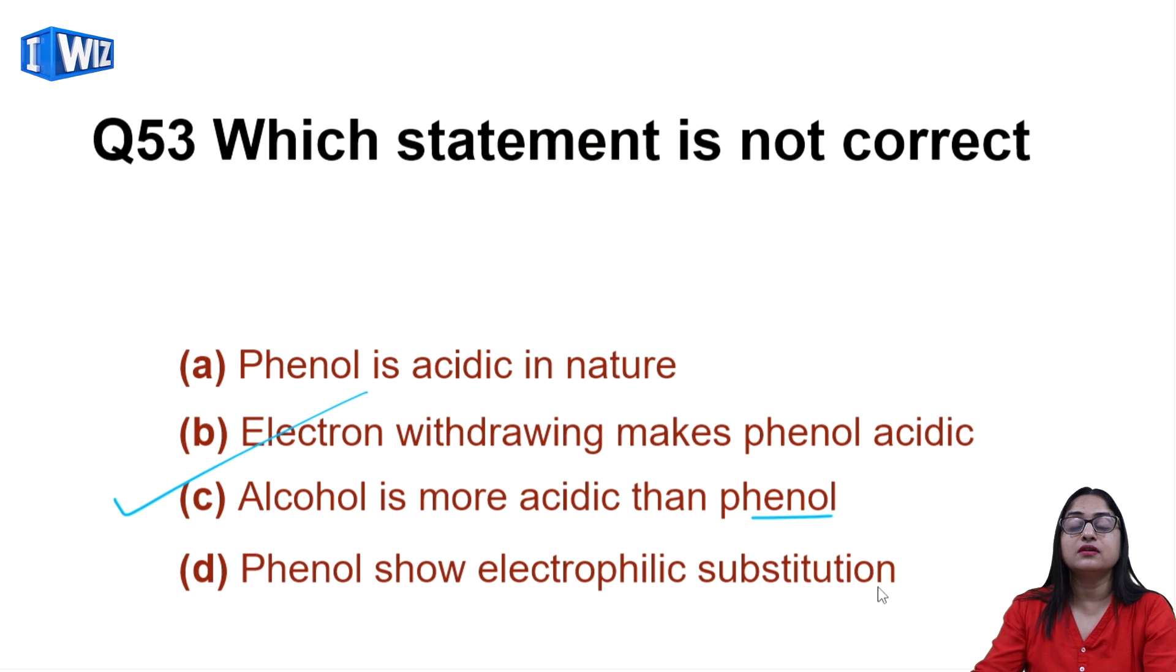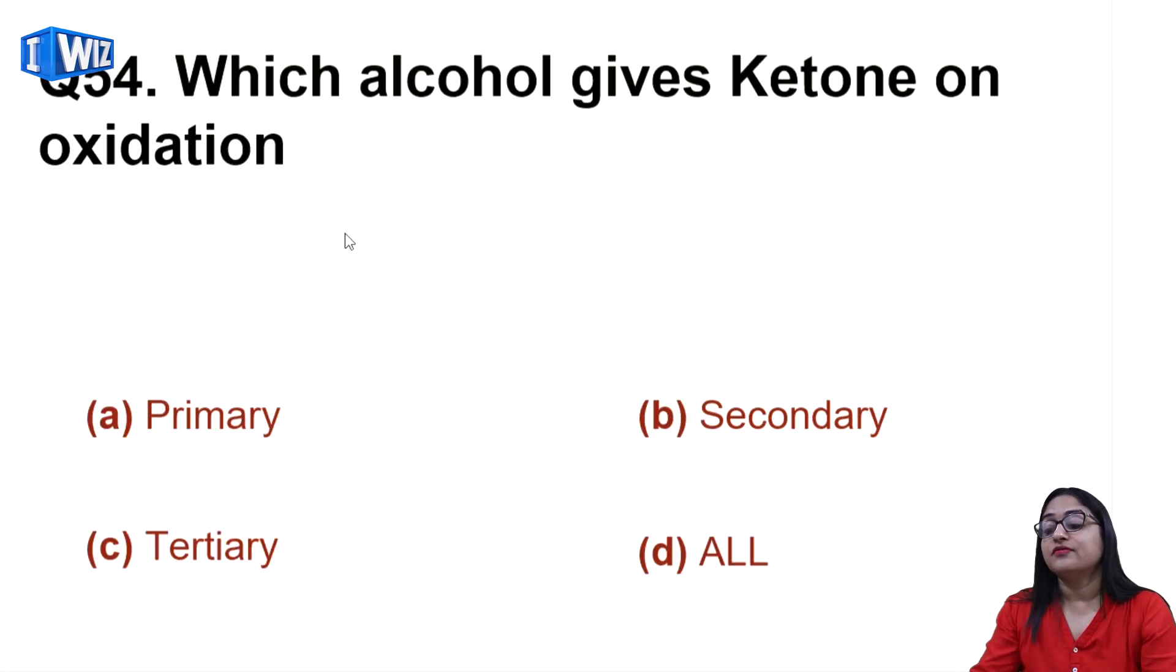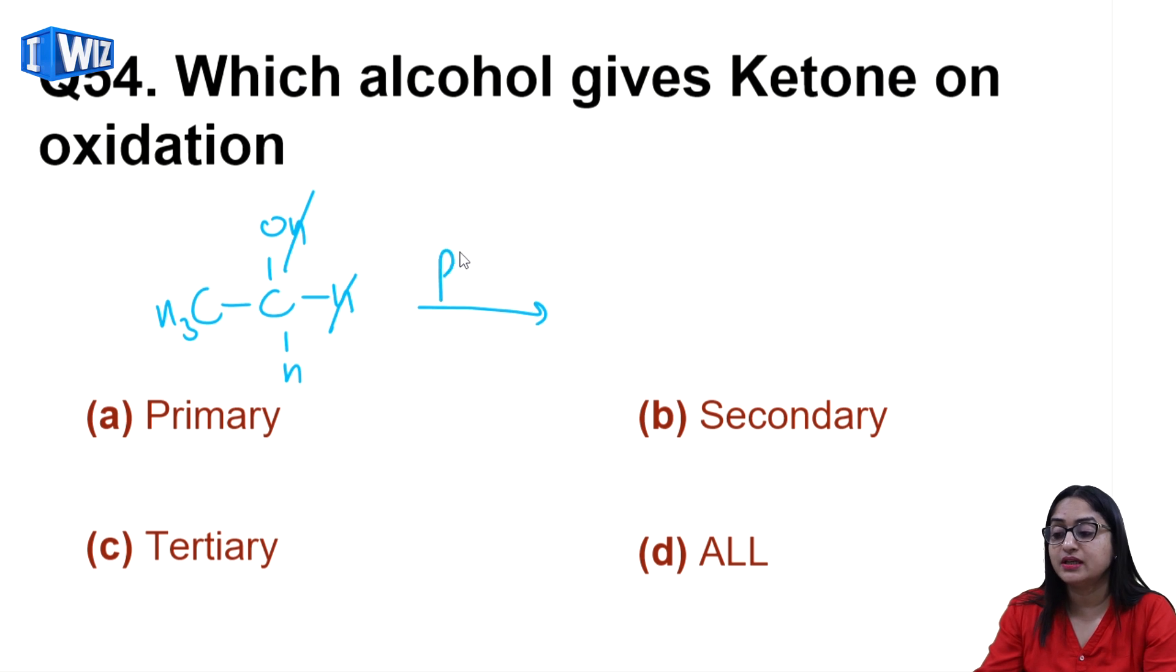Then which alcohol gives ketone on oxidation? Secondary alcohol when you oxidize will give ketone. Hydrogen is eliminated and you will get CH3-CO-CH3. So this is secondary alcohol giving you ketone, so your answer is B.